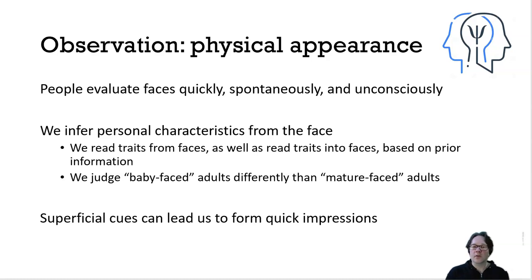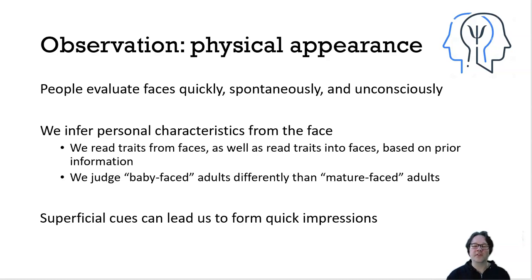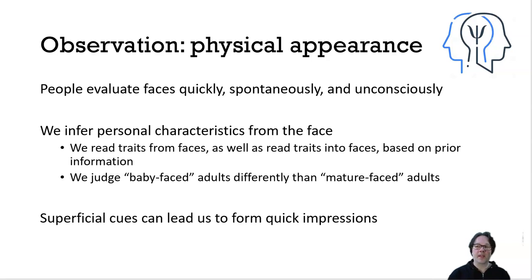The first thing that we notice about other people is how they look. Observation — the information we get from observation — is one of these raw data forms of social perception. Physical appearance is an important part of that, because people evaluate other people very quickly, particularly other people's faces. We evaluate other people's faces very quickly, and we do it unconsciously, almost spontaneously.